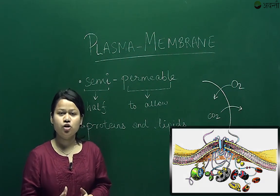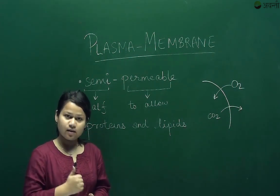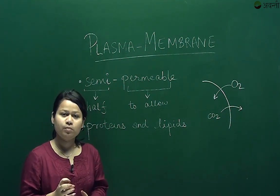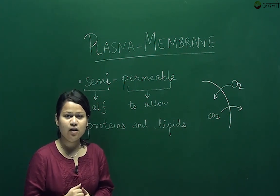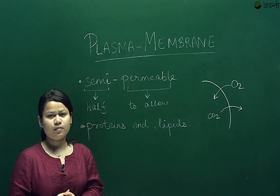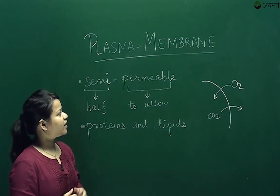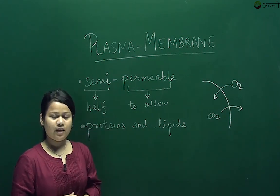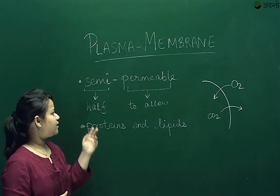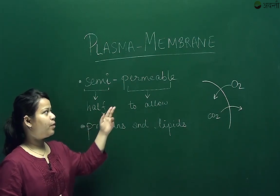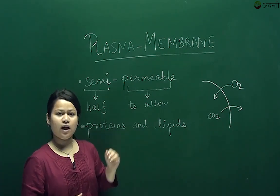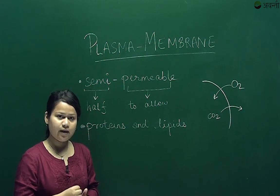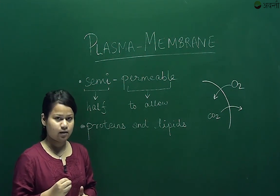It ensures that good substances enter the cell and also ensures that important parts of the cell do not leave. Now the plasma membrane is semi-permeable in nature. Semi means half and permeable means to allow, so it allows only selective molecules to enter and selective molecules to exit.